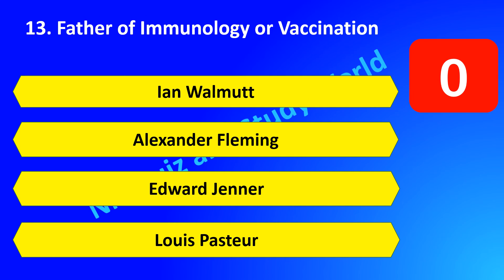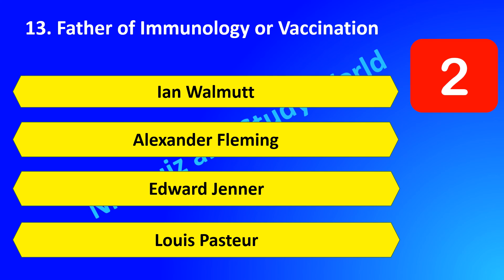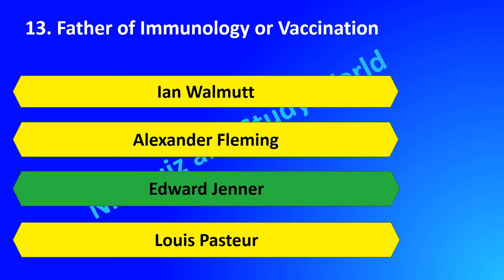Who is the father of immunology or vaccination? Is it Ian Wilmut, Alexander Fleming, Edward Jenner, or Louis Pasteur? The answer is Edward Jenner. Edward Jenner is the father of vaccination, whereas Ian Wilmut is the father of cloning.